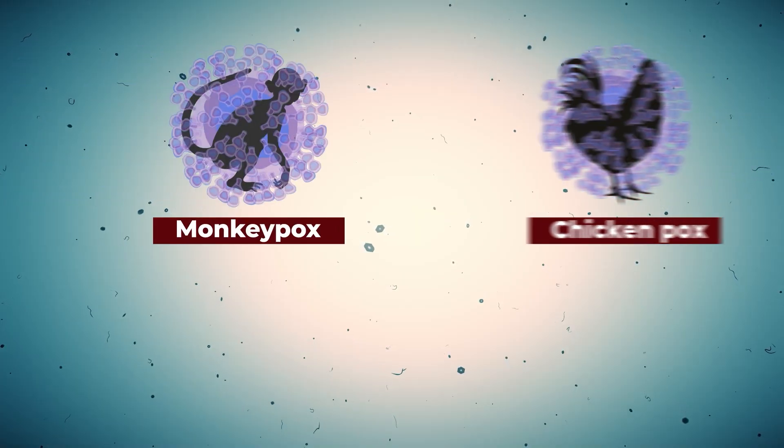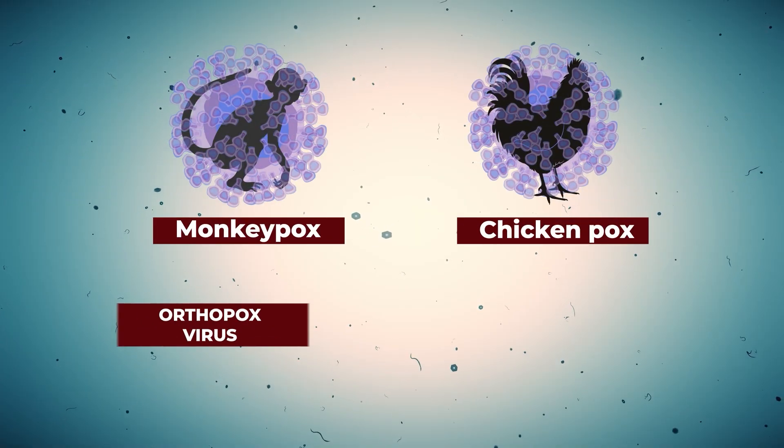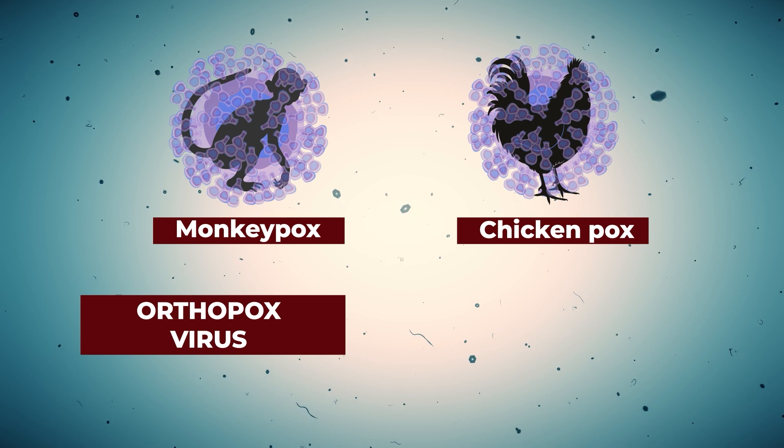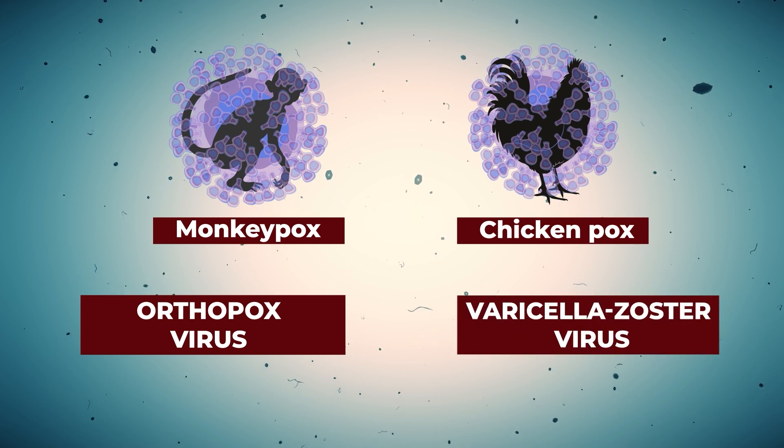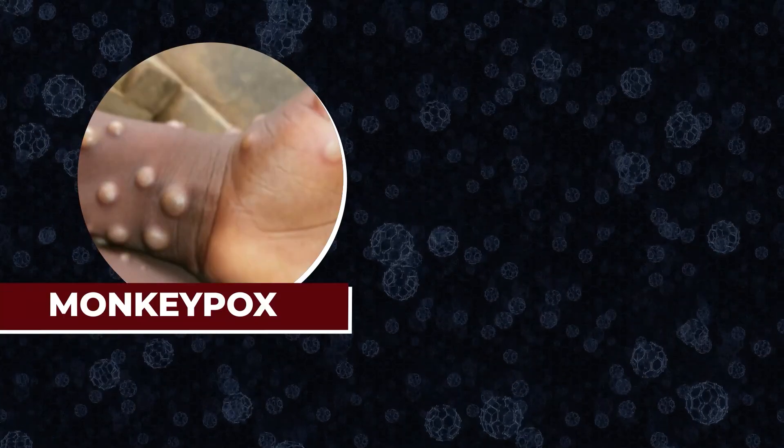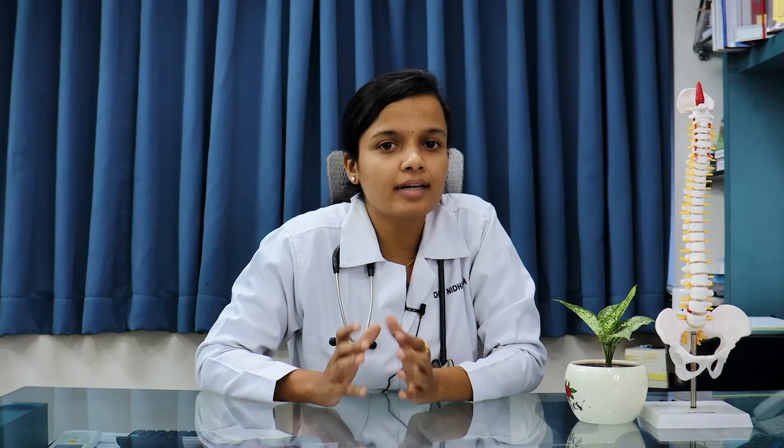Now let's discuss differentiation between monkeypox and other pox-like illnesses. First, monkeypox and chickenpox: monkeypox is caused by orthopox virus while chickenpox is caused by varicella-zoster virus. Monkeypox is more fatal compared to chickenpox, and involves mostly all age groups while chickenpox involves mostly children. Monkeypox and smallpox are both caused by orthopox virus families.